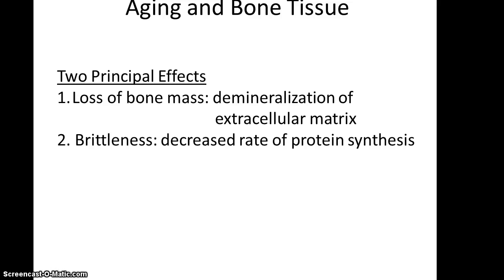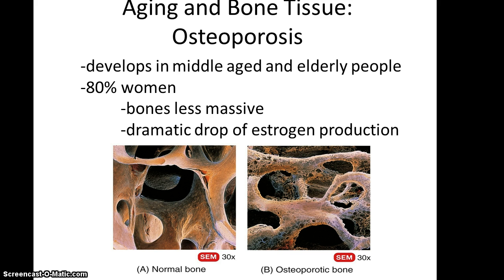Aging affects bone tissue in two principal ways: loss of bone mass from demineralization of the extracellular matrix, and brittleness from decreased rate of protein synthesis. One possible disease resulting from this is osteoporosis, which usually develops in middle-aged and elderly people. Eighty percent of people with osteoporosis are women, because their bones are less massive than men's and they often experience a dramatic drop in estrogen production after menopause, leading to less calcification of their bones. That concludes this portion and the final portion of Chapter 6.